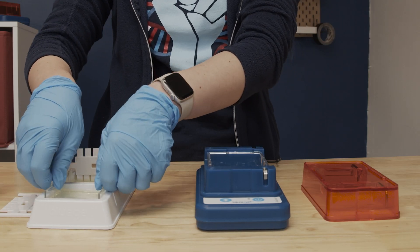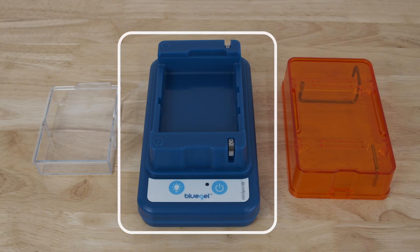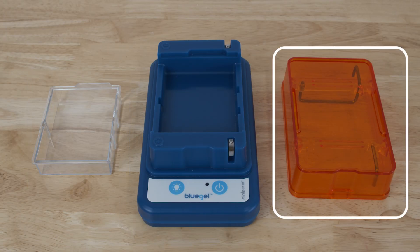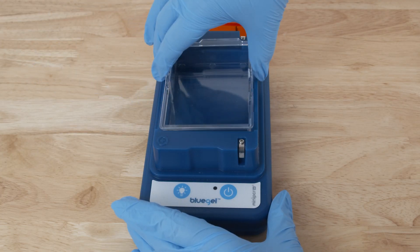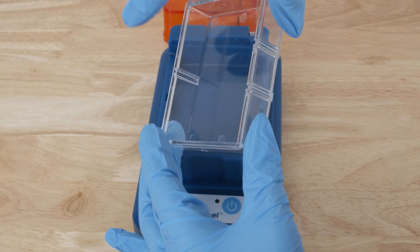Next, you will want to run your gel in the main Blue Gel System. The Blue Gel has a blue base, a clear buffer chamber, and an orange cover. To begin, place the buffer chamber in the blue base. Notches on the side ensure it can only be inserted in the correct orientation.